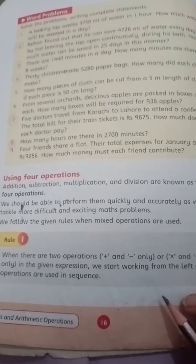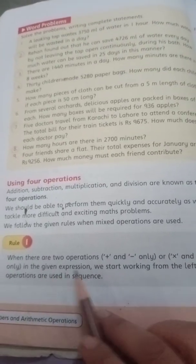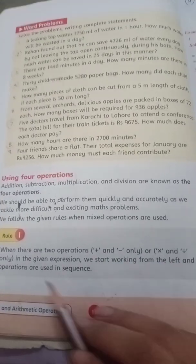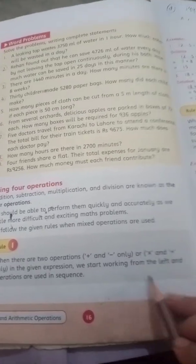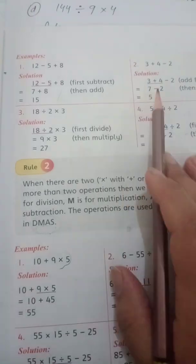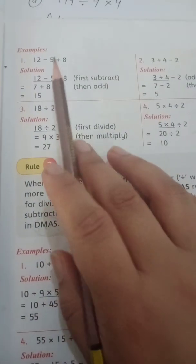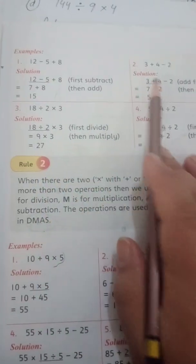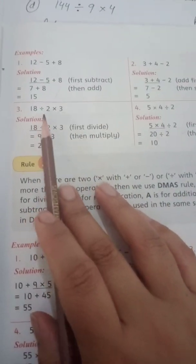Okay students, see, this is rule 1 in book 4. When there are two operations, plus and minus only are multiplied and divided only in the given expression. We start working from the left and operations are used in sequence. So, let's start from the left, just like we have used to do it. This is the expression, there are two operations involved. Plus and minus in one expression and divide and multiply.